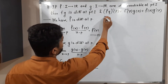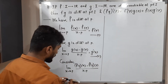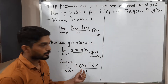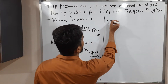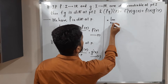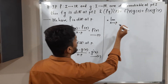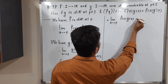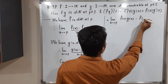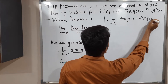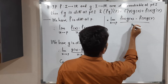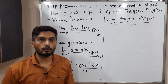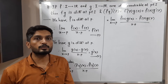We operate these functions on x and p, so we have: limit x tends to p of [f(x)·g(x) minus f(p)·g(p)] divided by [x minus p]. We cannot apply the limit directly, so we need to do some adjustment.